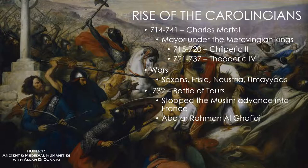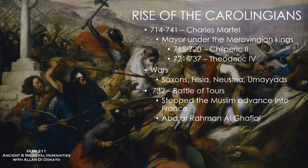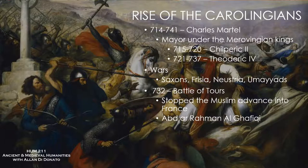After the battle, Martel continued to hold the hill, not sure it was over. Even the next day they expected an Arab attack that never came — the Arabs had departed, abandoning much of their camp. Eventually the Franks came down, did reconnaissance, and realized the Arabs had left — seemingly the end of the Arabic threat to the region.